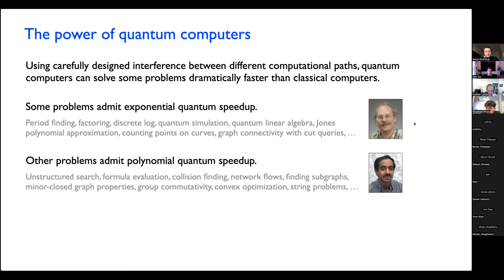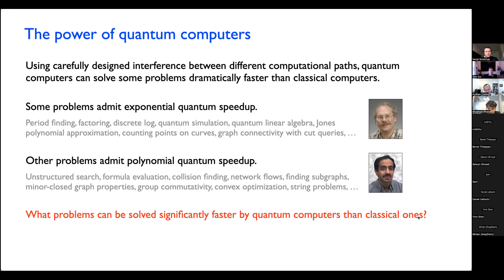Whereas probably Shor's factoring algorithm is maybe the best known example of a quantum algorithm that provides super-polynomial quantum speedup, Grover's algorithm is maybe the best known example of a quantum algorithm providing polynomial quantum speedup. But there are many other examples of problems in both of these categories. The basic question we're interested in addressing is: what are the problems we can solve a lot faster using quantum computers than with classical ones? And when we see new problems, how can we understand whether those are problems for which we can get some quantum speedup, and if so, how much? These speedups really depend on exploiting particular structures of particular kinds of problems.